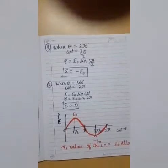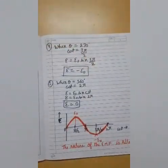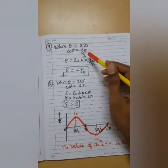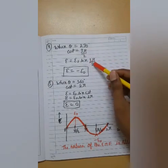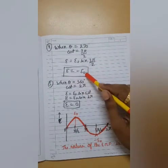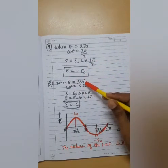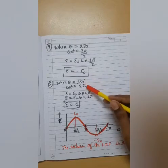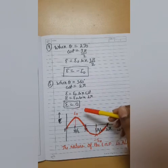Further, if we take theta as 270, then that is 3 pi by 2. Then it is minus 1. So, our EMF would become minus e knot. And if we take theta as 360, that is 2 pi. Obviously, it is 0. Sin 360 is 0. Therefore, EMF would become 0.